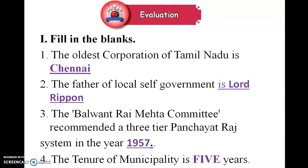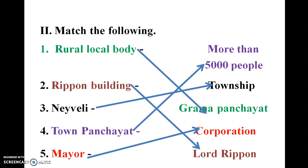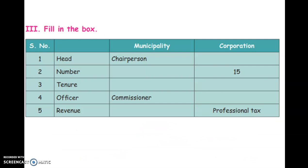Fill in the blanks answers: First, the oldest corporation of Tamil Nadu is Chennai. Second, the father of local self-government is Lord Ripon. The Balwant Rai Mehta Committee recommended a three-tier panchayat raj system in the year 1957. The tenure of municipality is five years. Match the following: rural local body — grama panchayat; Ripon Building — built by Lord Ripon; Nagercoil — town panchayat; town panchayat — more than 5000 people; Mayor — related to corporation.